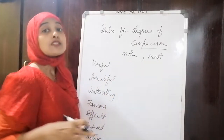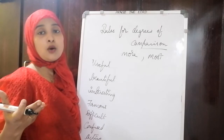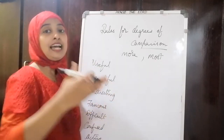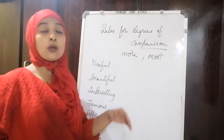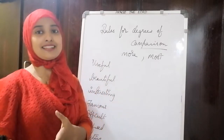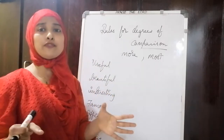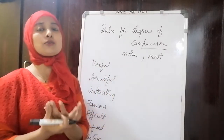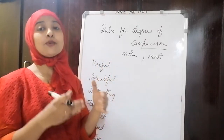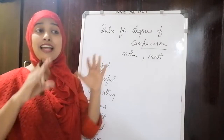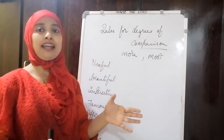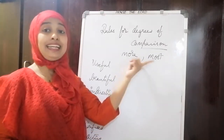Similarly for 'beautiful': 'She is more beautiful than her' — comparing two people. 'She is the most beautiful girl in the class' — meaning among all in the class, she is the most beautiful. That is the superlative degree, telling the highest intensity in comparison.